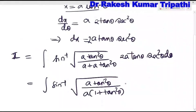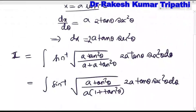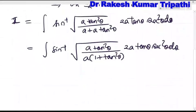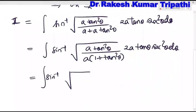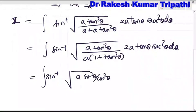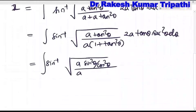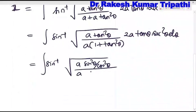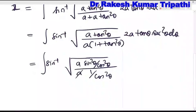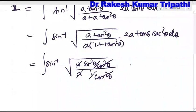This gives sin⁻¹(√(tan²θ / (1 + tan²θ))). We can write tan²θ as sin²θ/cos²θ, and 1 + tan²θ is sec²θ, which equals 1/cos²θ. The 'a' values and cos²θ cancel out, simplifying the expression under the square root.